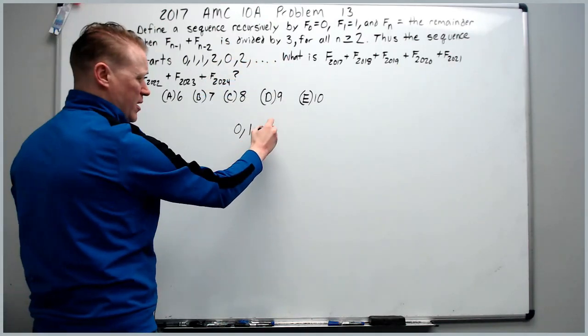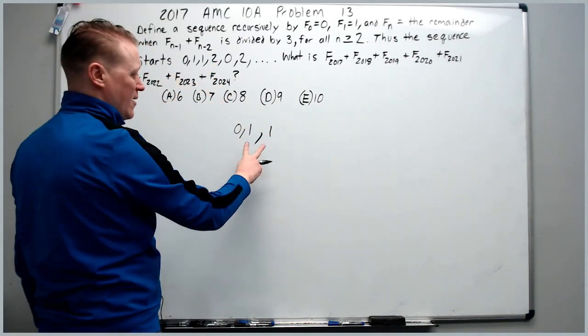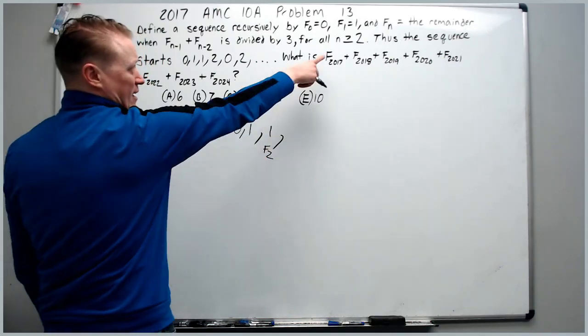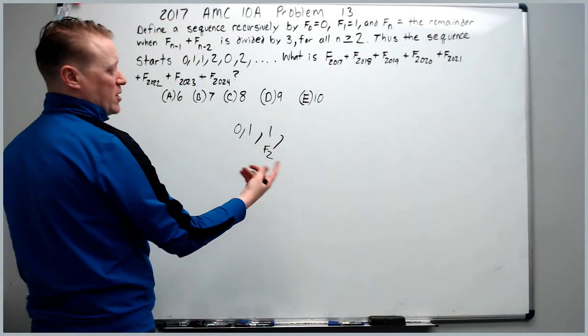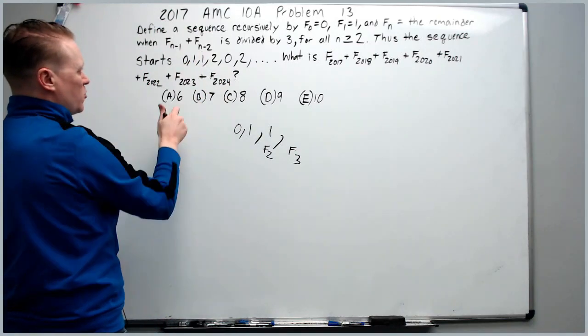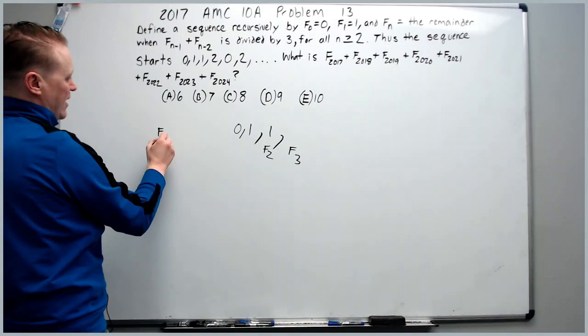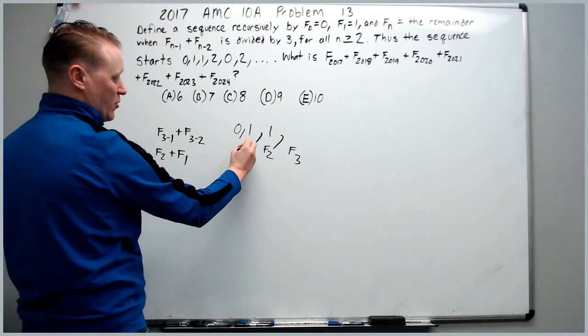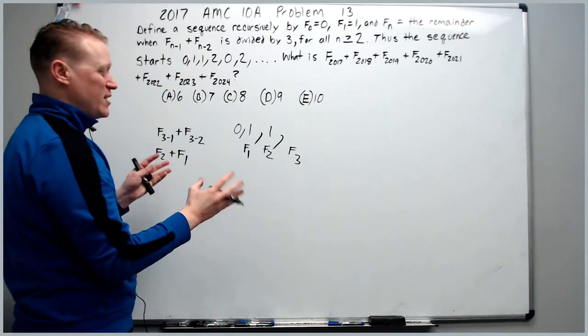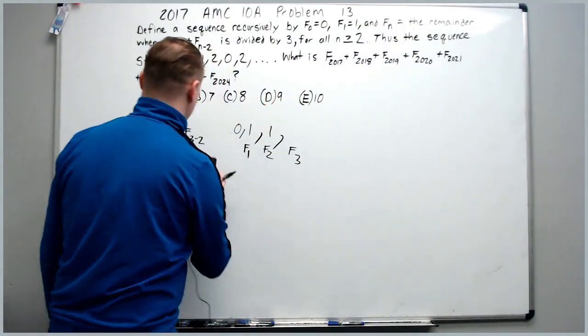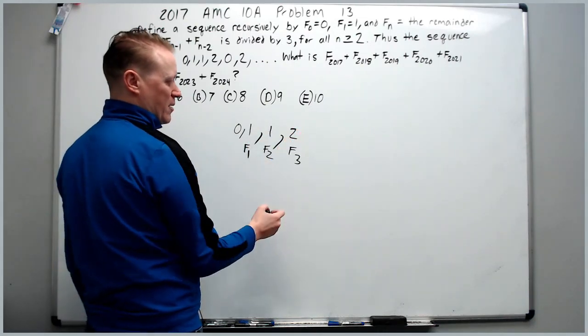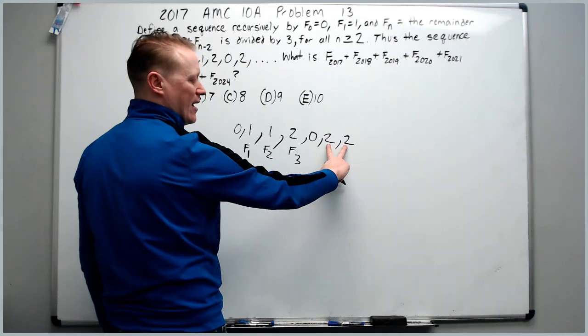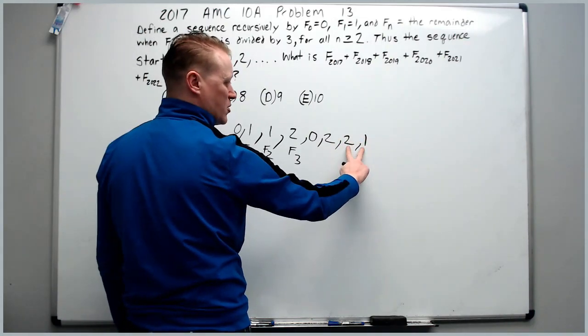If I add these, I get 1. When I divide by 3, the remainder is 1. Let's keep going. Once we understand that reality, we just continue. 1+1 is 2, divided by 3, remainder is 2. Add these, divide by 3, remainder is 0. Add these, remainder is 2. Add these, remainder of 2 again. Add these is 4, you went over 3 by 1, so remainder is 1, remainder is 0, remainder is 1, and 0+1, remainder is 1.